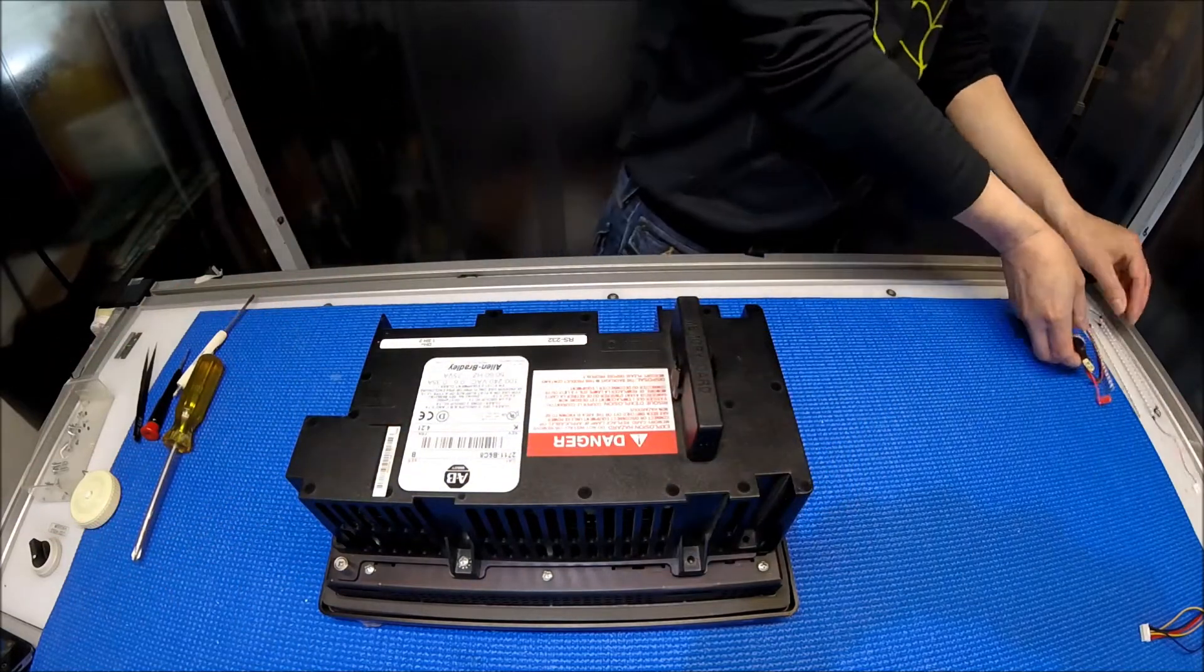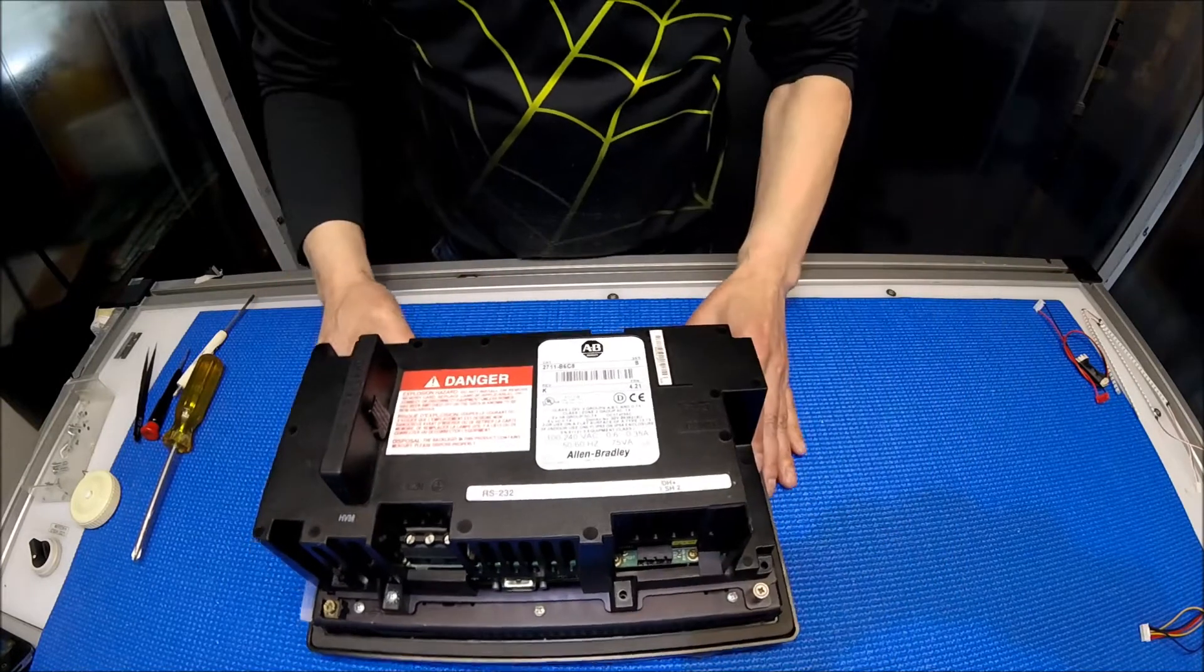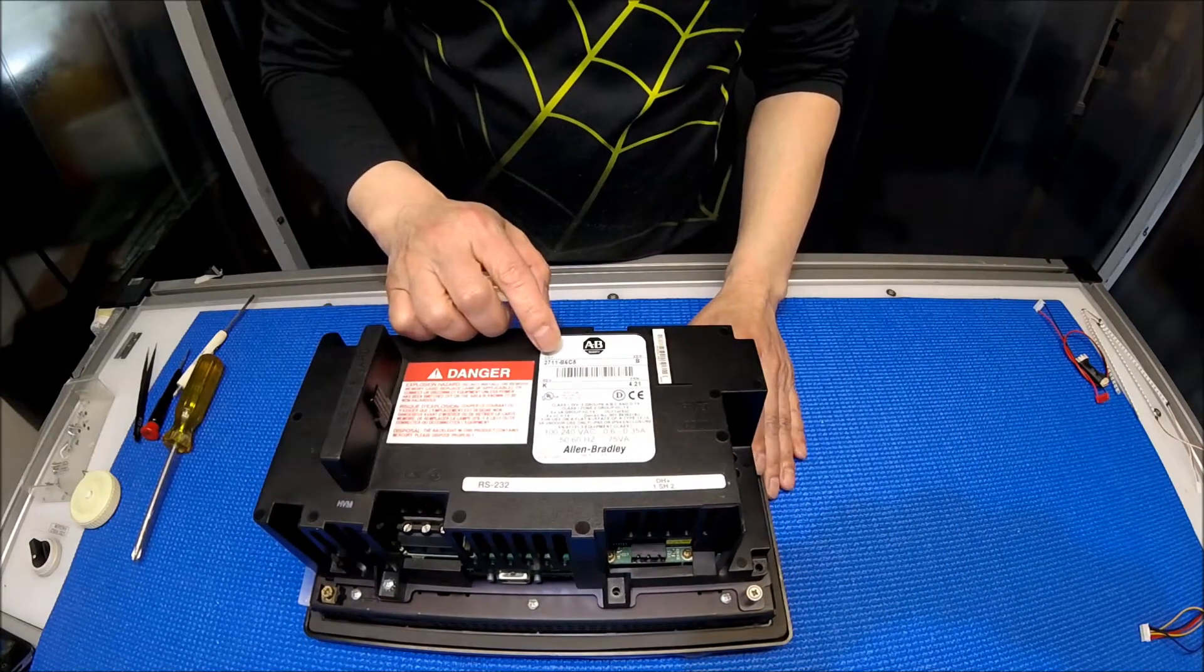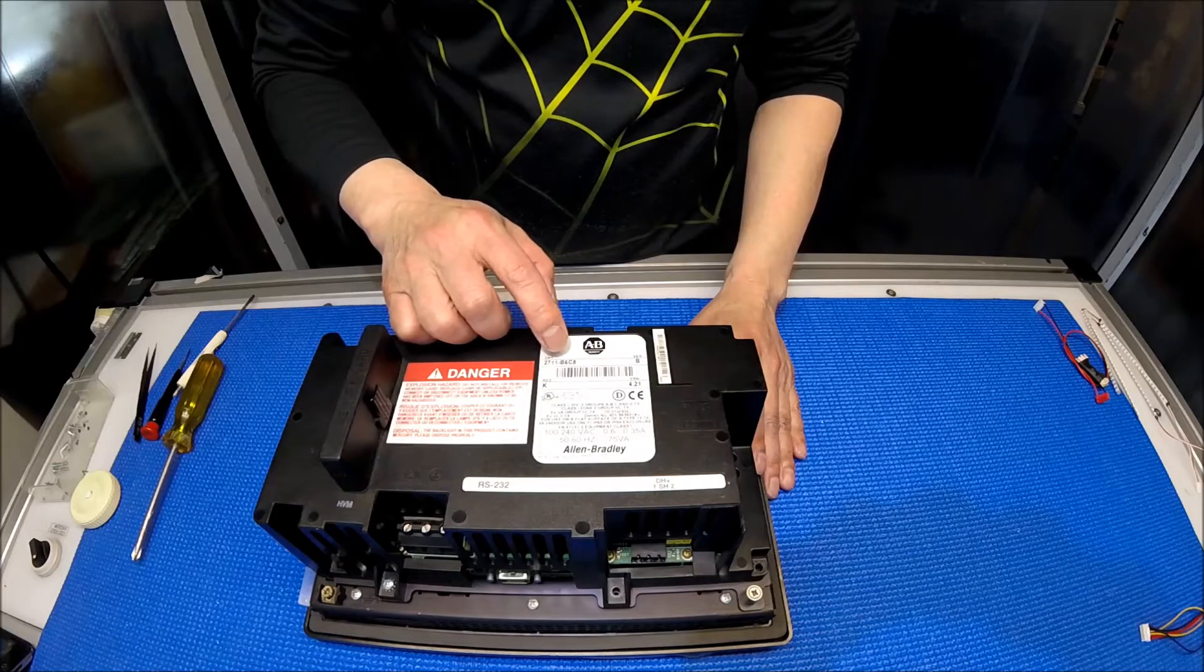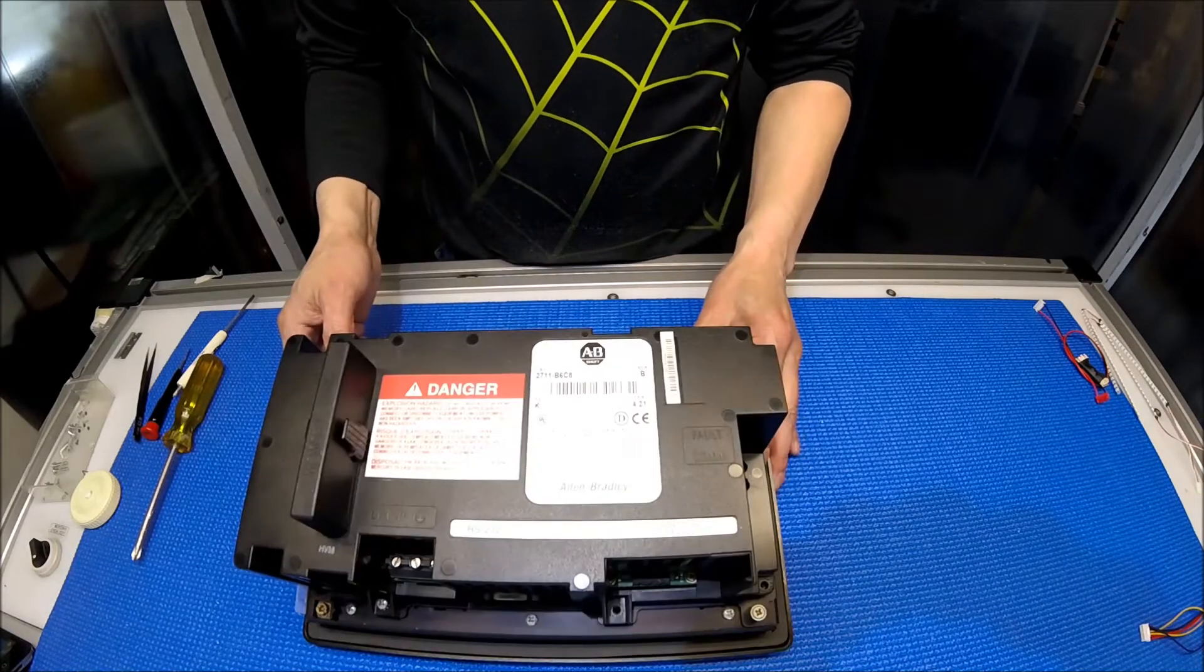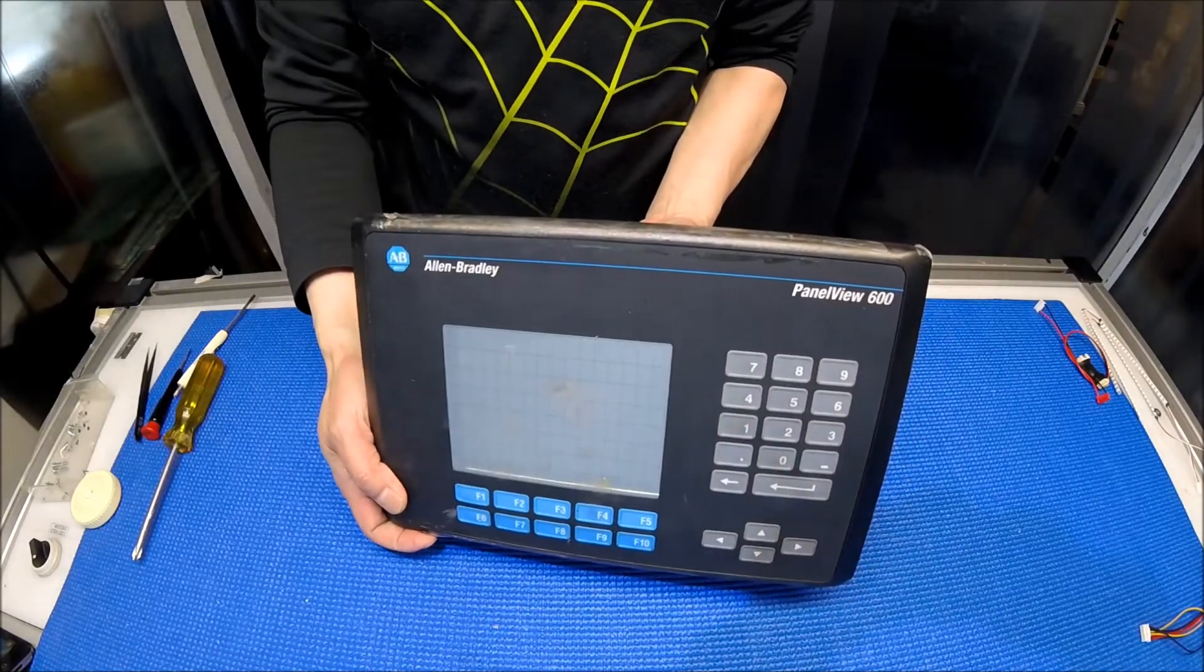Let's set this aside for a second and take a look at this model, the Allen Bradley 2711-B6C8. This is model 2711-B6C8. All right, let's look at the front panel.